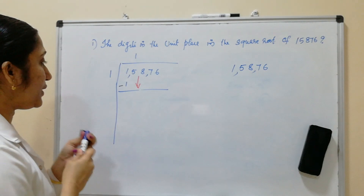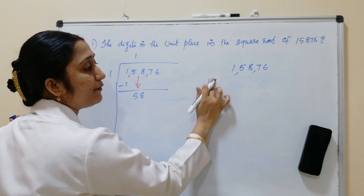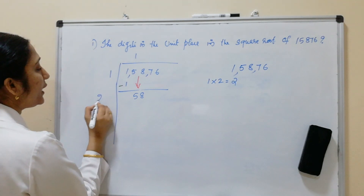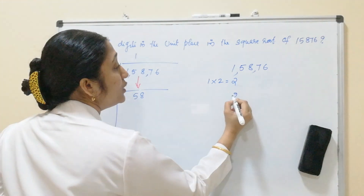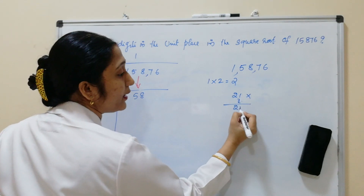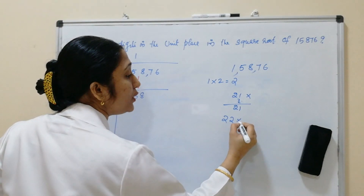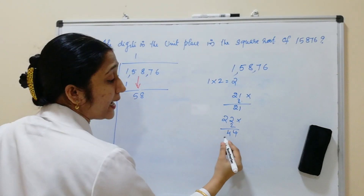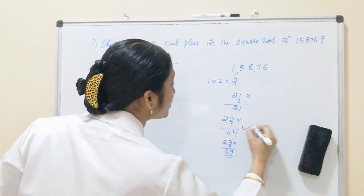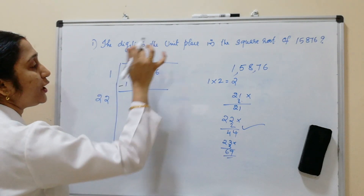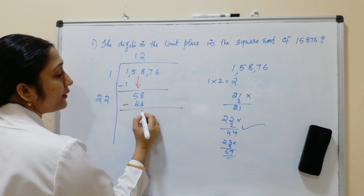Now the next step: 1 is our current result, so double it to get 2. We need to find a digit d such that 2d × d is as close to 58 as possible without exceeding it. Trying d=2: 22 × 2 = 44. Trying d=3: 23 × 3 = 69 — too large. So we choose 2, giving 22 × 2 = 44. Subtracting 44 from 58 gives remainder 14.